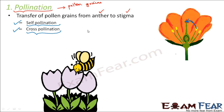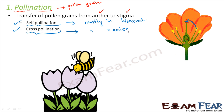Self-pollination occurs mostly in bisexual flowers, because bisexual flowers have both male and female parts in the same flower, so pollination can happen within that same flower. In cross-pollination, pollen grains are transferred from the anther of one flower to the stigma of another flower — two different flowers are involved. Cross-pollination mostly happens in unisexual flowers, but it can also happen in bisexual flowers.